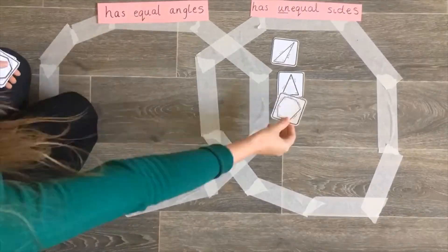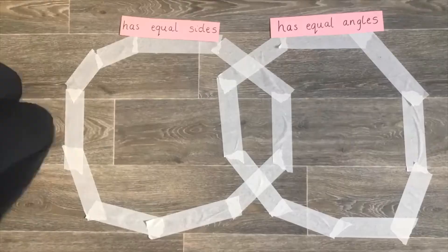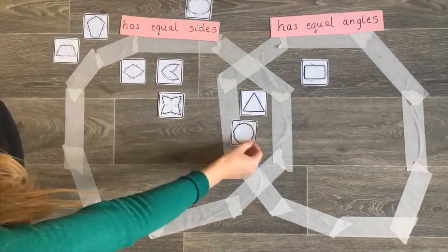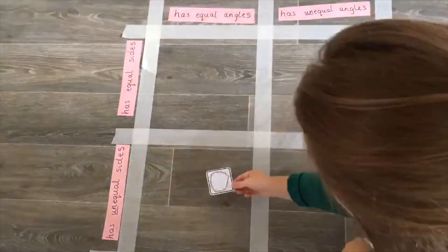Next we move on to the sorting. This could be done as an individual, a pair, a group, or even a whole class activity, whatever suits your setting best. You could use hoops, chalk, or even masking tape to create large Venn and Carroll diagrams. Let children try different arrangements of the headings, and remember to prompt learners to find the section which contains regular polygons.